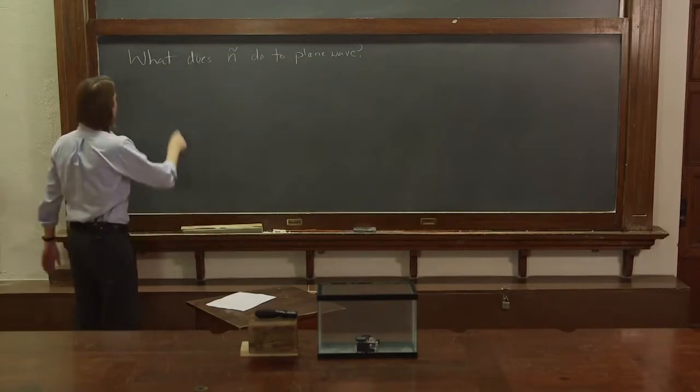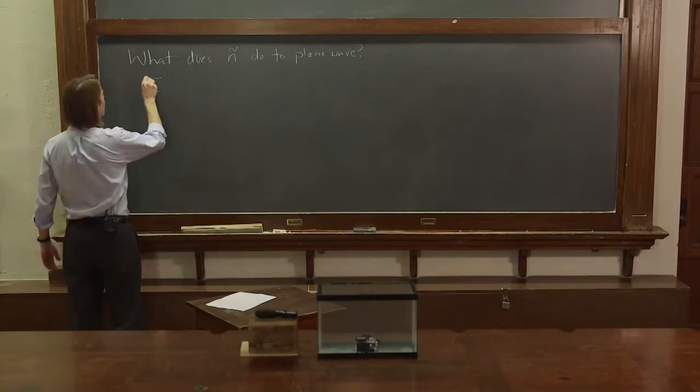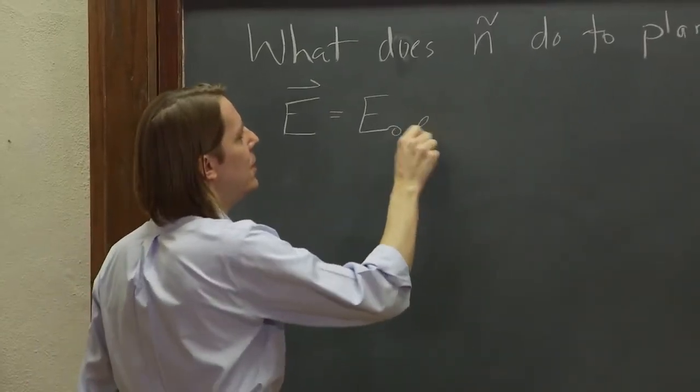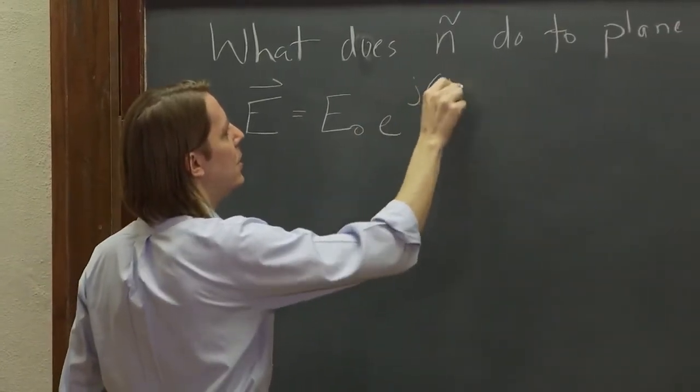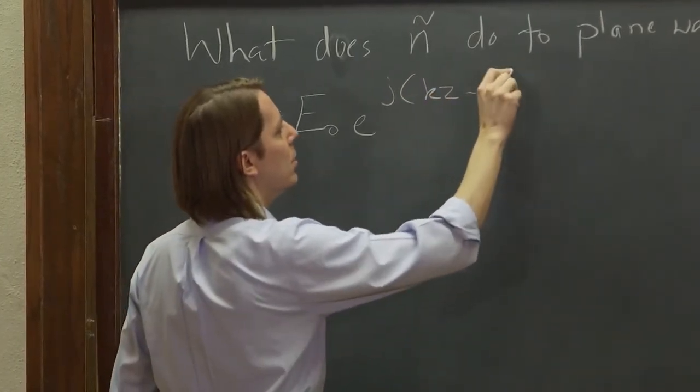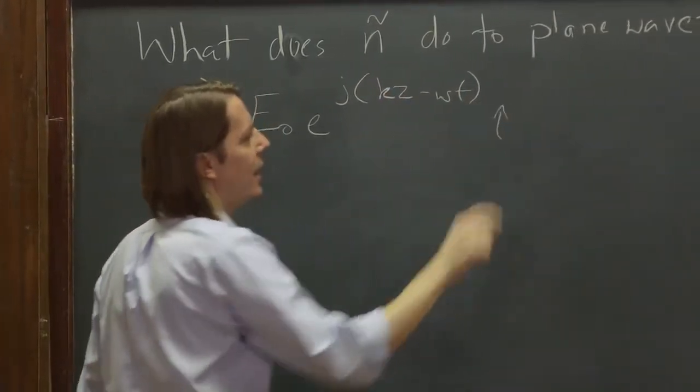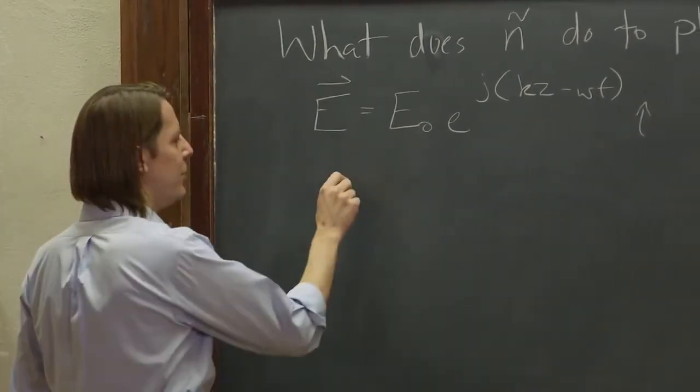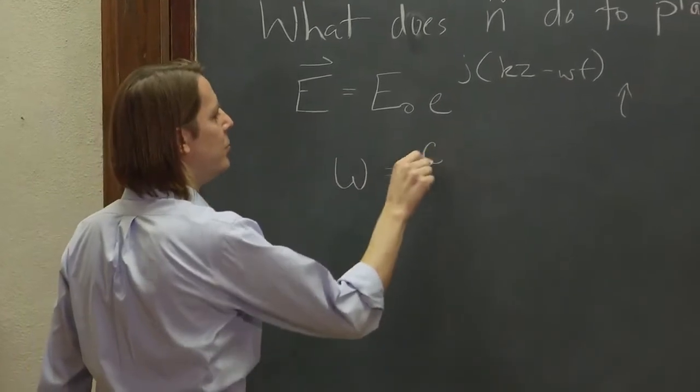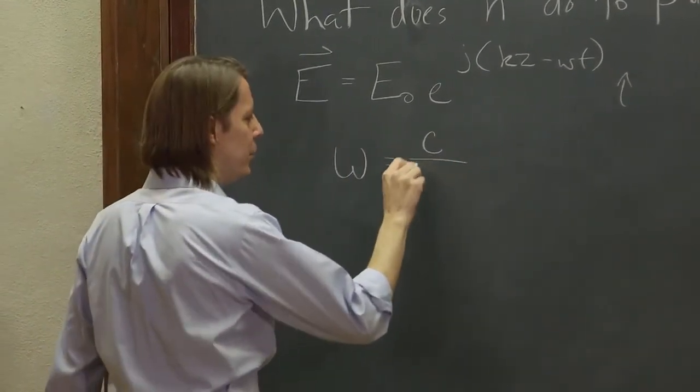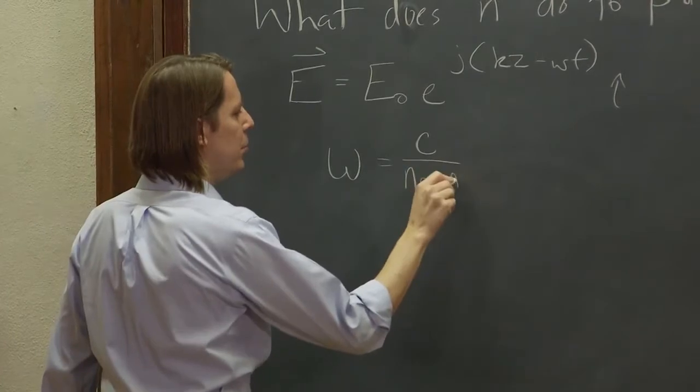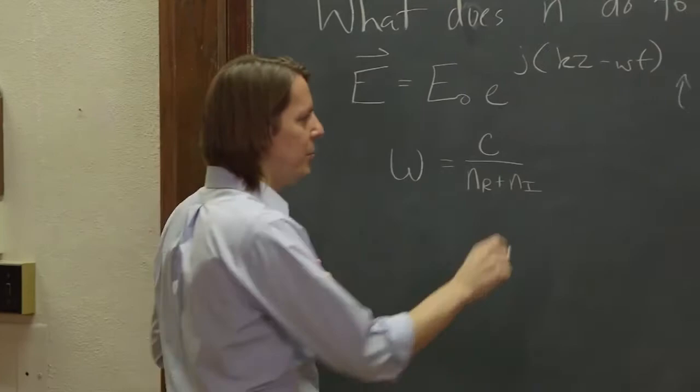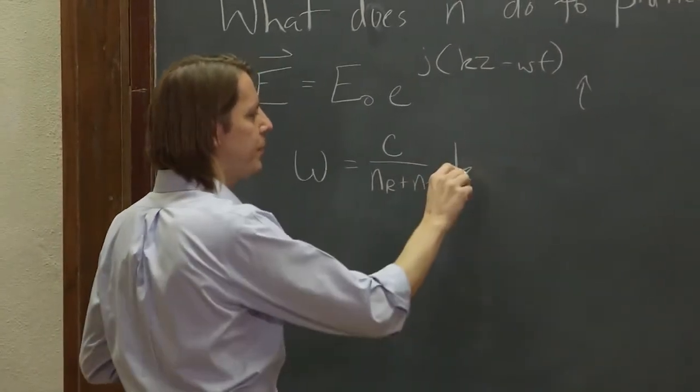Well, let's start and just write the easy version of a plane wave, where it's just along one axis, where E equals some amplitude E₀ e to the j, say it's going along z, kz minus omega t, and say i hat. And the dispersion relation we came up with was that omega equals speed of light over a big mess, which we'll just write as n real plus n imaginary times wave number k.